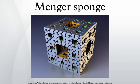Repeat steps two and three for each of the remaining smaller cubes, and continue to iterate ad infinitum. The second iteration will give you a level two sponge, the third iteration gives a level three sponge, and so on. The Menger sponge itself is the limit of this process after an infinite number of iterations.